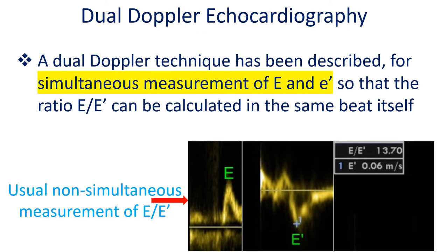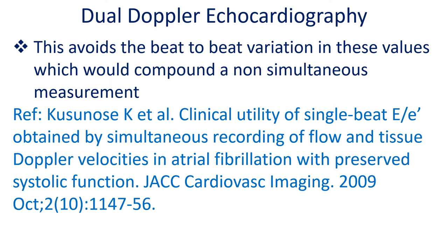A dual Doppler technique has been described for simultaneous measurement of E and E', so that the ratio E by E' can be calculated in the same beat itself. This avoids the beat-to-beat variation of these values in AF which would compound a non-simultaneous measurement.